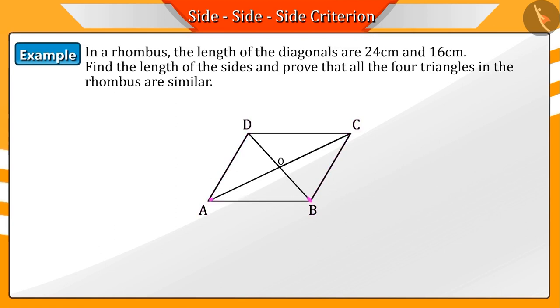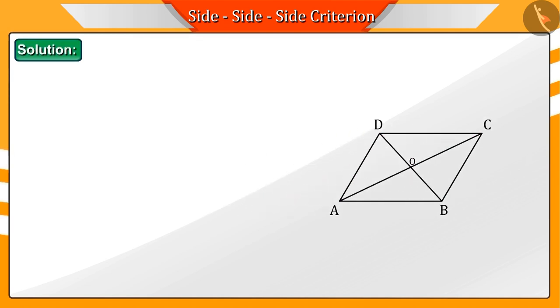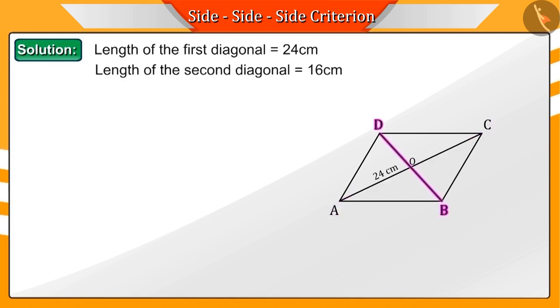The diagonals of a rhombus measure 24 cm and 16 cm respectively. Find the length of the sides of the rhombus and also prove that all the four triangles in it are similar. Because we know that there are two diagonals in a rhombus, let diagonal AC be 24 cm and diagonal BD be 16 cm long.